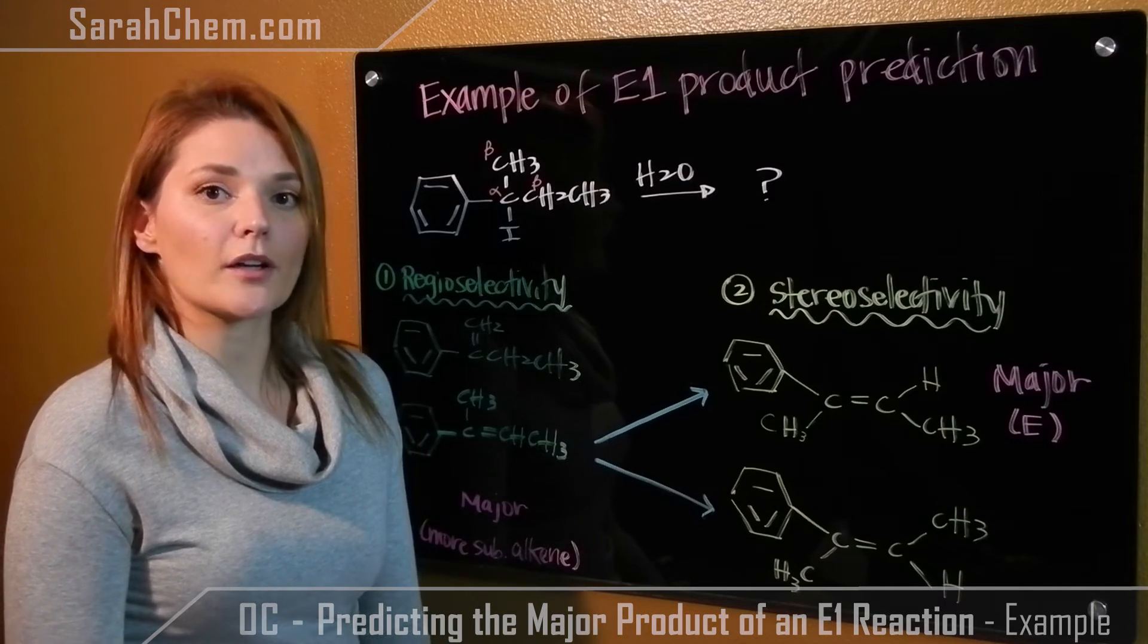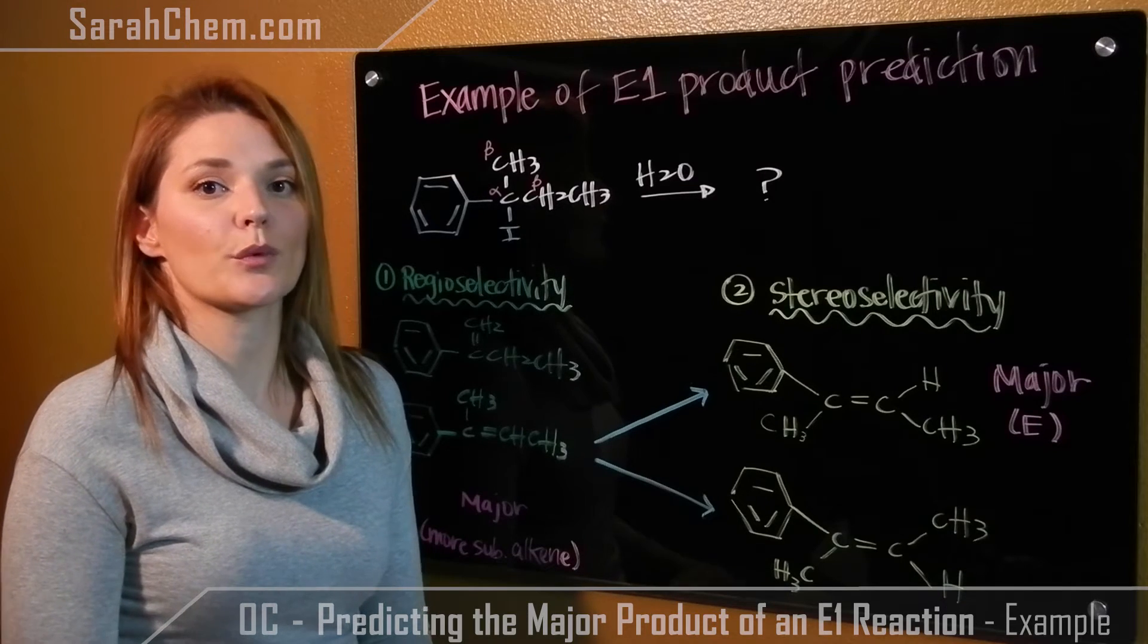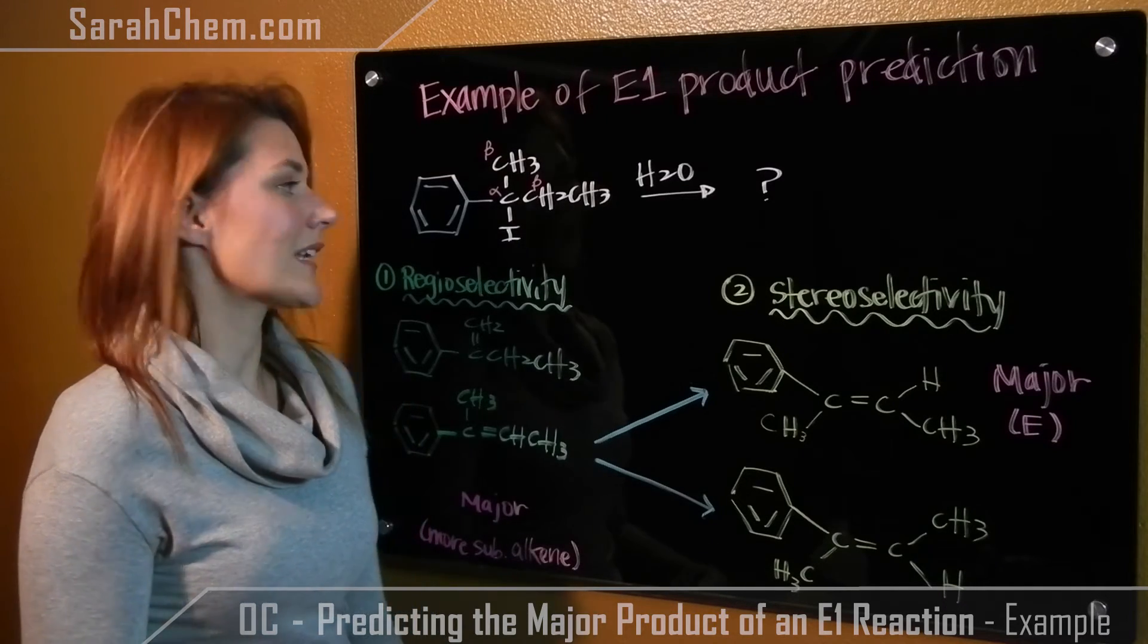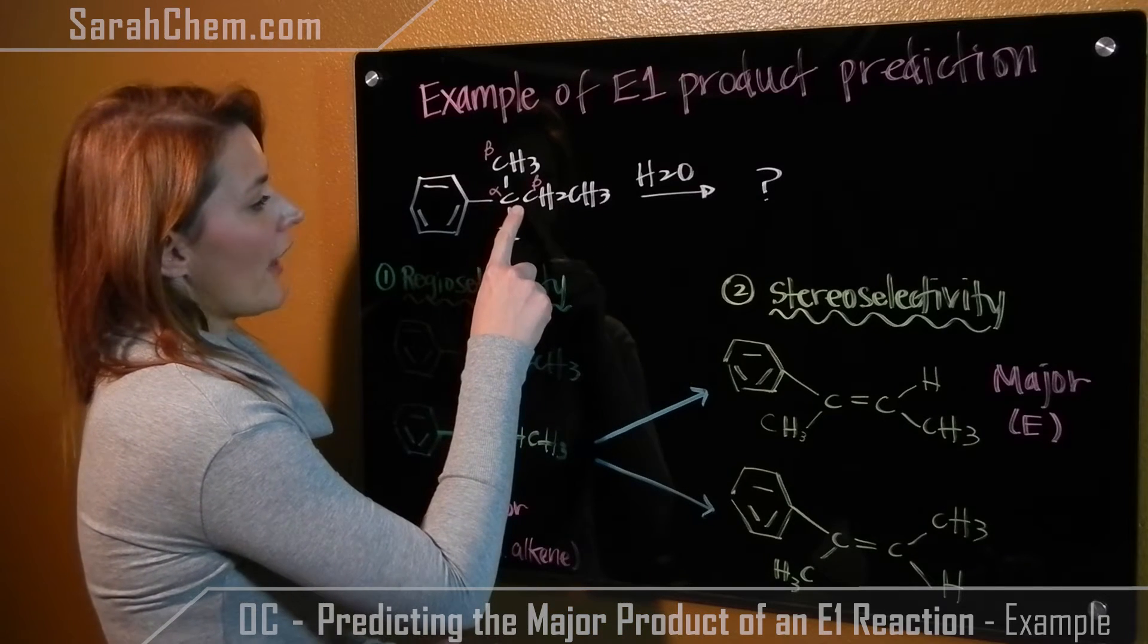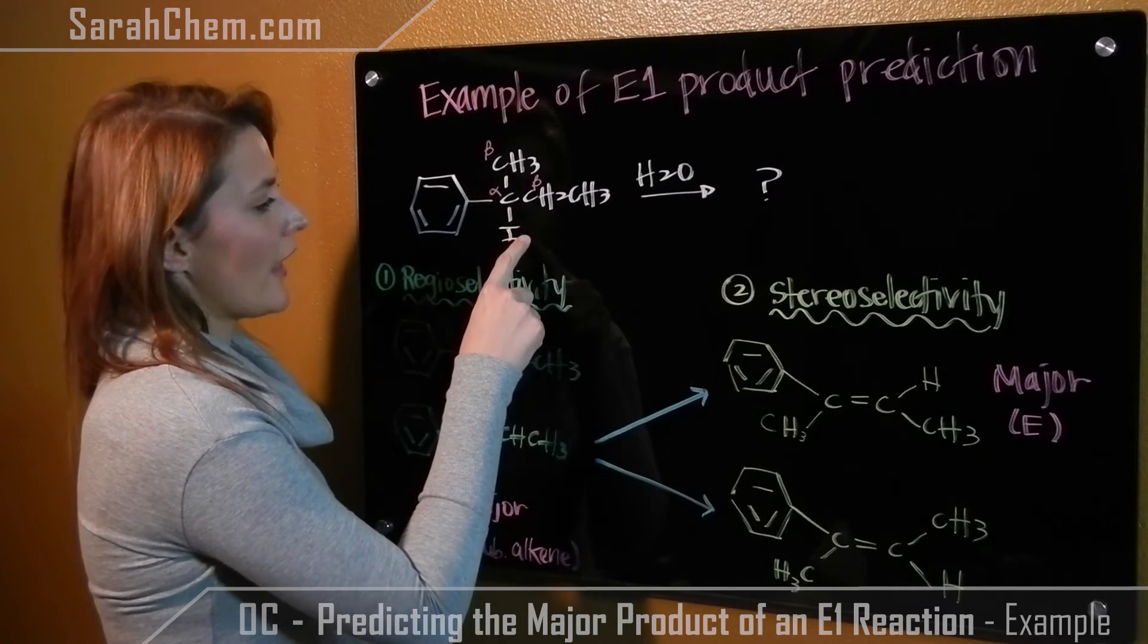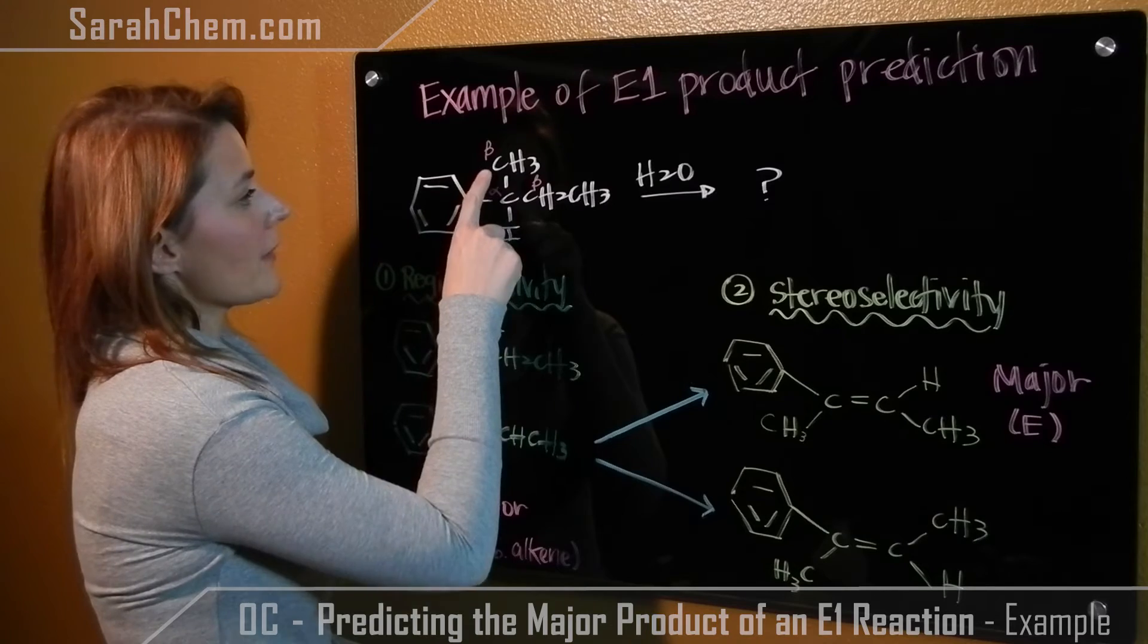When predicting product, remember, the first thing you do is look at the regioselectivity. So the first thing you need to do is identify the alpha carbon. The alpha is the one attached to the halide. All other carbons are beta.